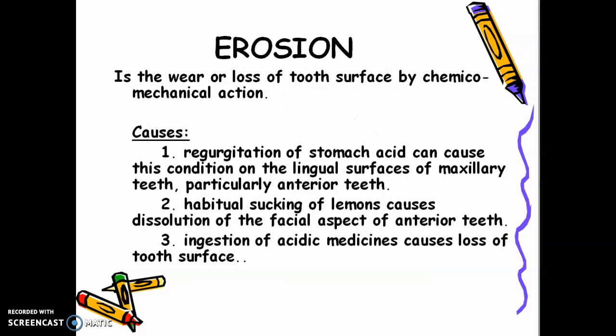Next is erosion — a wear or loss of tooth surface by chemical-mechanical action. Causes include regurgitation of stomach acid, which can cause this condition on the lingual surface of maxillary teeth. When stomach acid repeatedly contacts the teeth, it causes erosion of the lingual surface of the maxillary teeth. In your chemistry class — what acid is found in your stomach? Can you comment down your answer?